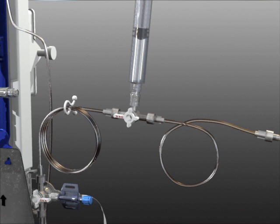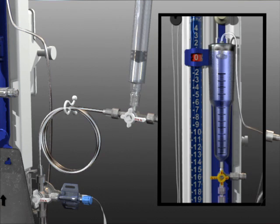Rotate the stopcock arm as shown to prime the short section of patient line tubing first. Rotate the stopcock 180 degrees to prime the patient line all the way through to the drip chamber. Use care to ensure all bubbles have been removed from the line.